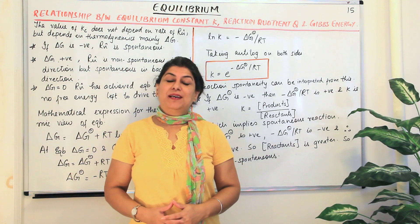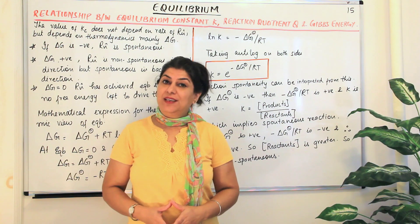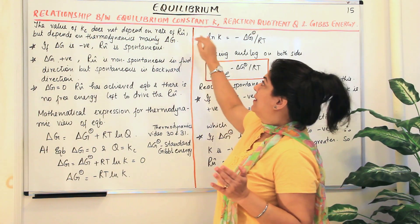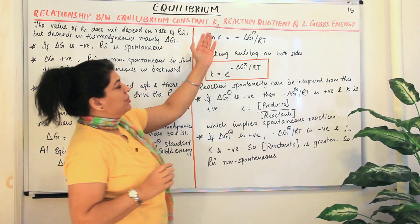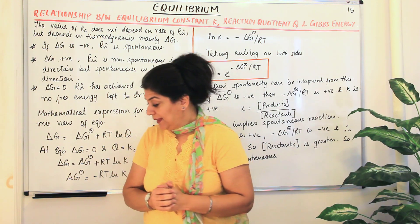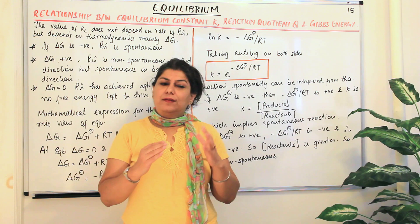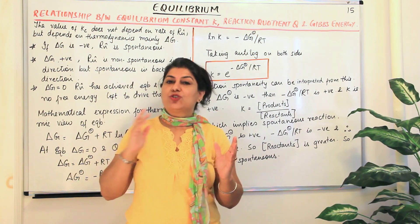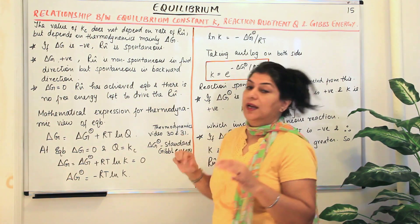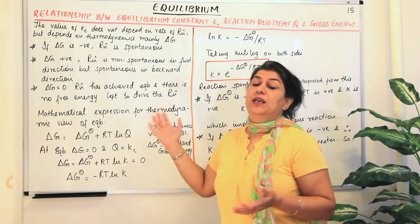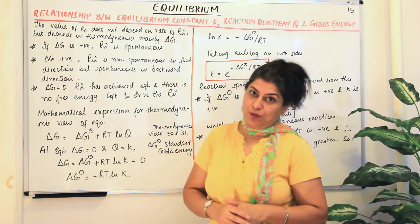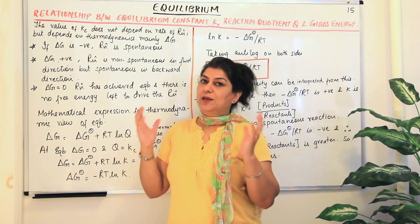Hello, I'm Sima and welcome to part 15 of the chapter Equilibrium. In this video I'm going to tell you about the relationship between the equilibrium constant K, the reaction quotient Q, and Gibbs free energy, which is delta G. We are now going to study that a little more clearly.